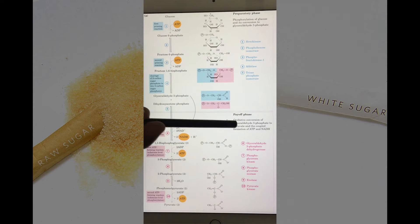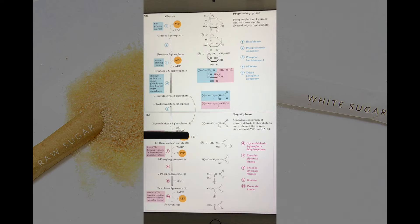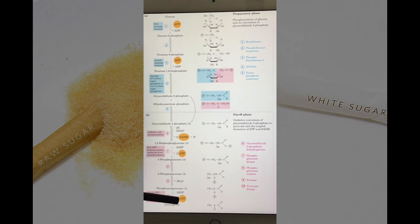In payoff phase, whatever energy that we have invested in preparatory phase is getting paid off. How? The molecule glyceraldehyde 3-phosphate will get converted by enzymes in a reaction sequence which will lead us to get whatever amount of energy present in the form of ATP, as you can see over here, and at the last step of pyruvate formation.